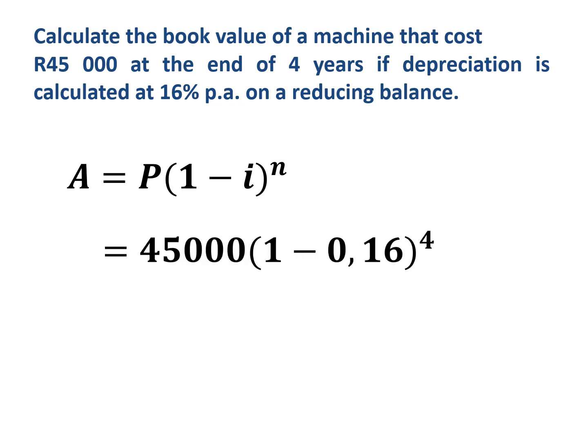So again, 45,000 Rand is what it's worth at the moment. One minus 0.16 and the exponent is 4. So you type it in exactly as you see it and you'll see it's worth slightly more if it's calculated on a reducing balance at the end of four years. So it's worth 22,404 Rand and 21 cents.